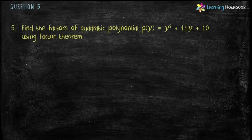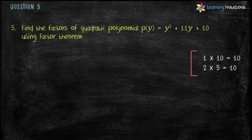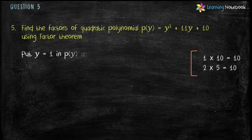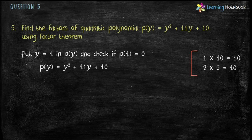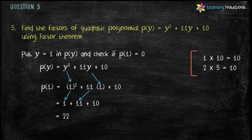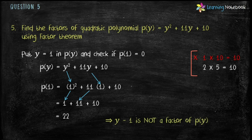Now let's do the last question. Find the factors of quadratic polynomial P(y) equals y² plus 11y plus 10 using Factor Theorem. To find factors, first let's find factors of constant term 10: 1×10=10 and 2×5=10. Let's put these values in P(y). First put y equals 1: P(1) equals 1² plus 11 into 1 plus 10 equals 1 plus 11 plus 10, so P(1) equals 22. The value of polynomial is not 0 at y equals 1. Therefore, y minus 1 is not a factor of P(y).